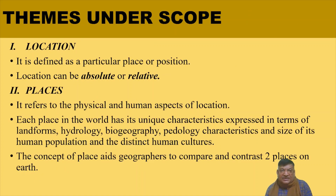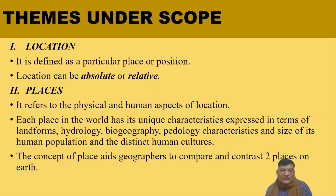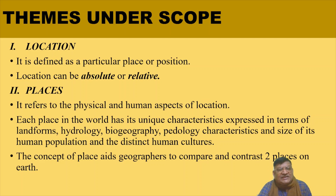Now we will broadly look at some basic themes within the scope of human geography. Various geographers have tried to classify the scope in their own ways, but if you do a comparative study, you will find similarities — the words differ but the content is largely the same. The first basic theme is location — defined as a particular place or position. Location can be absolute or relative.